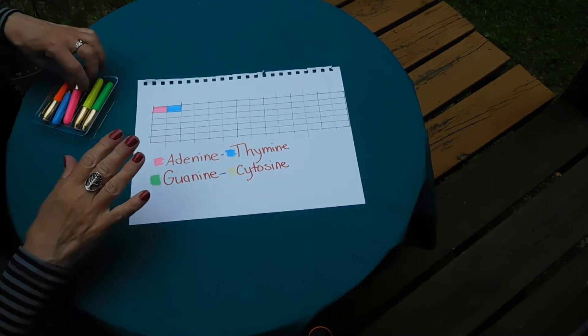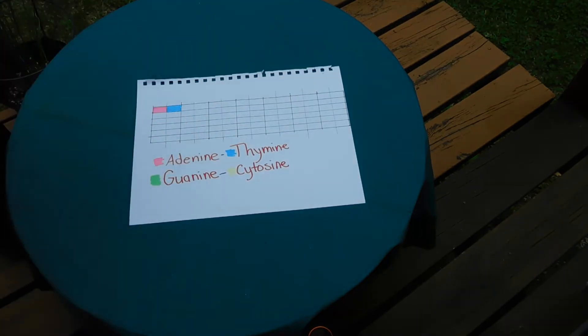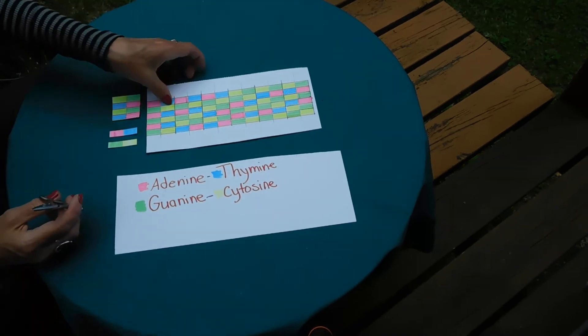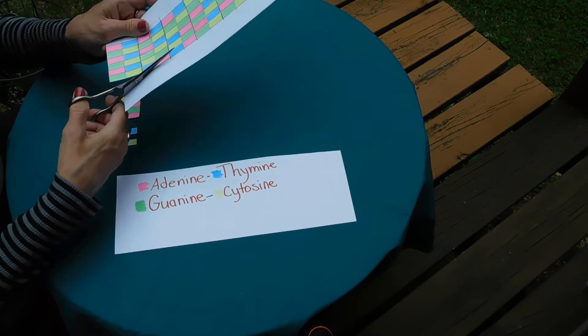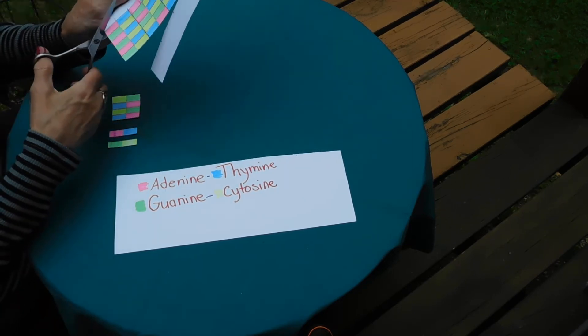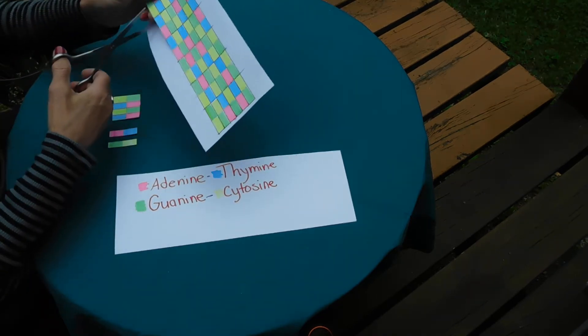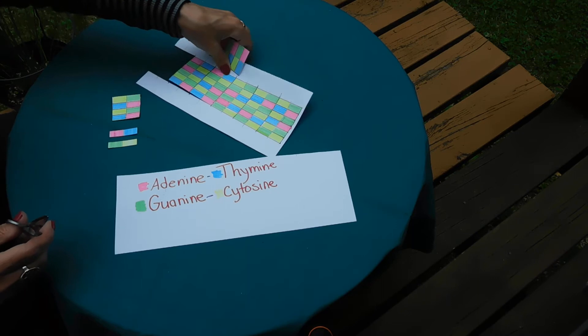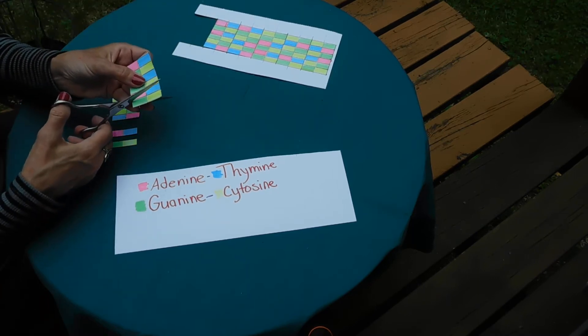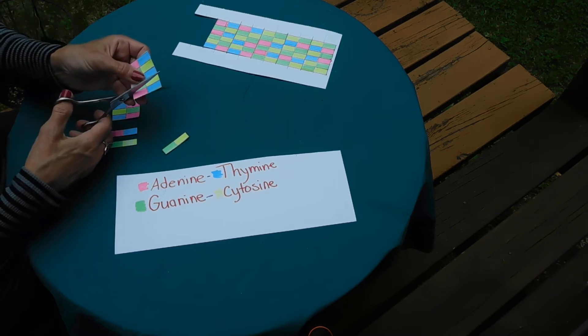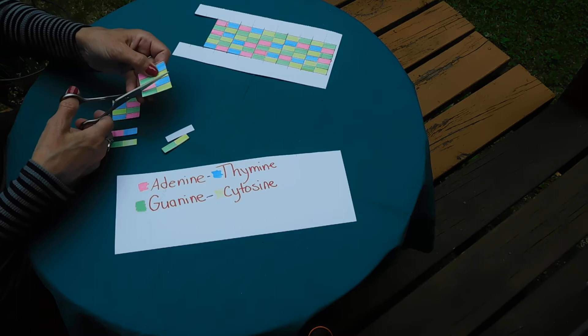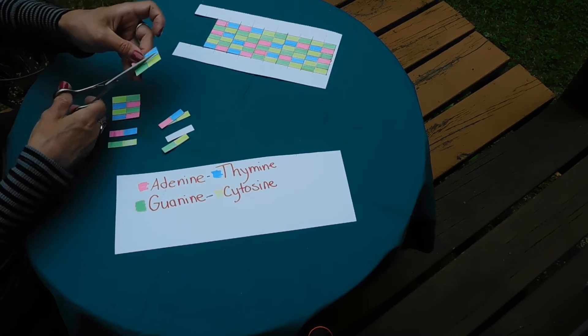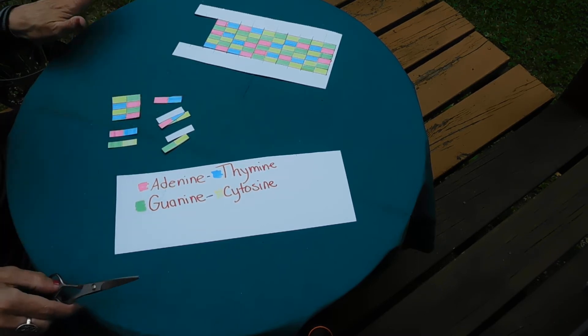So go through and color in all of your rectangles. Now that you have them all colored in, you are going to cut them out. And this is where I use the pen marks as my cutting guide, so I'm only going to cut along the pen marks, not along the pencil marks. Pencil marks were just to denote where each base pair was.